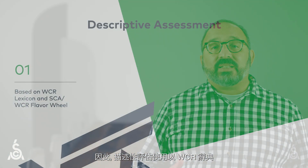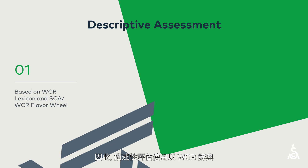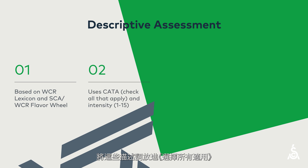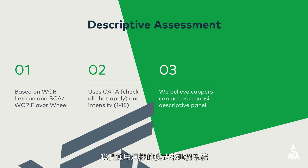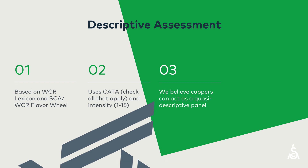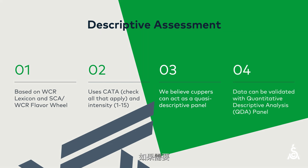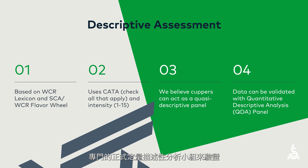The descriptive assessment therefore uses a lexicon based on the WCR lexicon and its associated flavor wheel. It puts those descriptors into a check-all-that-apply, or CATA, system with an intensity rating. We constructed it in this way because we believe that cuppers can act as a descriptive panel and data can be used for both research and trade purposes. If necessary, CVA data can be validated with a dedicated, formal, quantitative descriptive analysis panel.